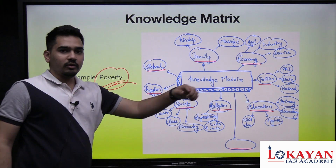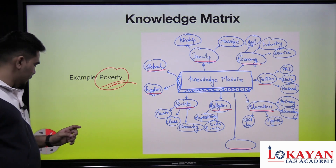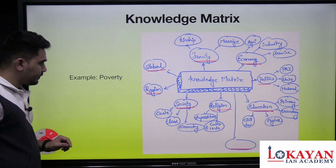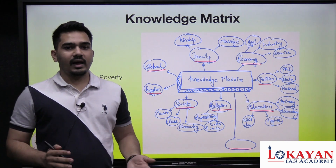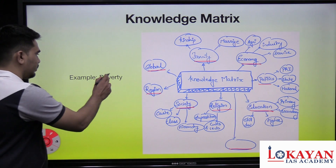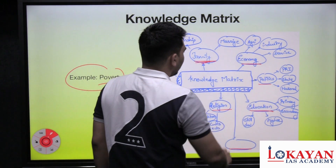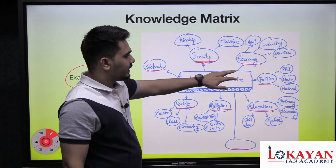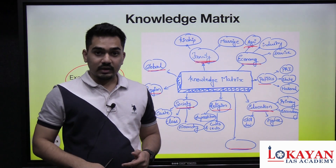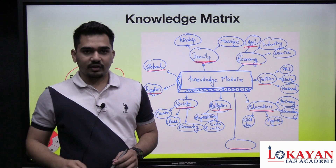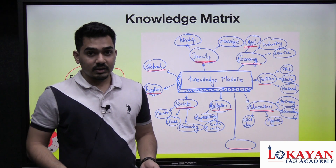For further clarity, let us use poverty as an example and apply the Knowledge Matrix on this problem. So, poverty will obviously have an impact on economy. If there is abject poverty, we know that per capita land in India is the lowest. The impact shows up from mechanization problems to agricultural productivity issues — farmers are not able to use high quality inputs or advanced technologies, even if they are cheaper.